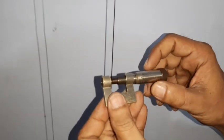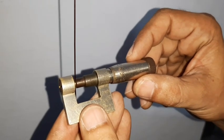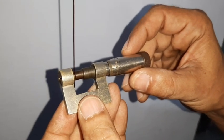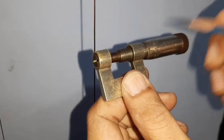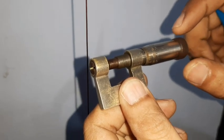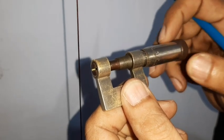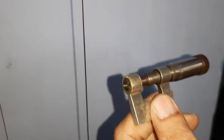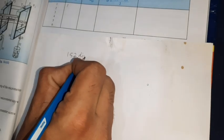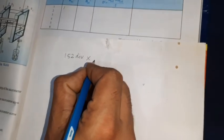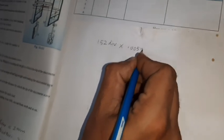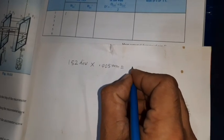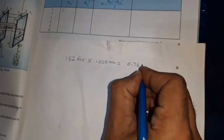Now noting the reading, it is 52 on circular, 52 divisions. So now we will check how many rotations it has. One rotation and half rotation, so the total number of divisions are 152 divisions. So 152 divisions multiplied by least count, which was 0.005 millimeter, turns out to be 0.76 millimeters.